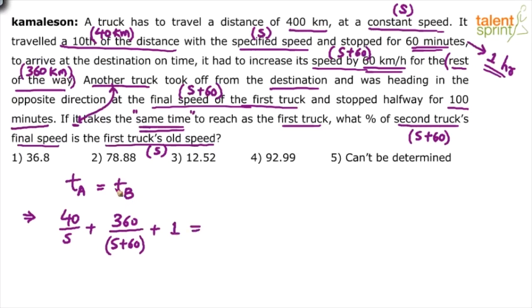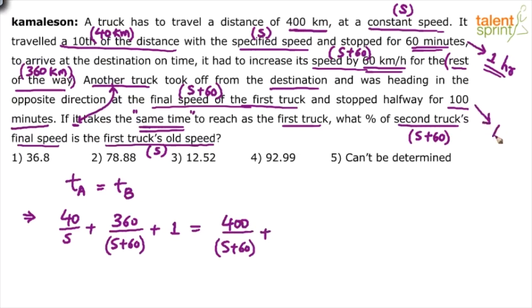Truck B traveled 400 kilometers at the same speed S plus 60 throughout — no mention of speed change. It only stopped halfway for 100 minutes. So the time taken by truck B is 400/(S+60) plus 100 minutes. Converting 100 minutes to hours: 100 minutes equals 1 hour and 40 minutes, which is 1 and 2/3 hours. We now have one equation and only one variable S.